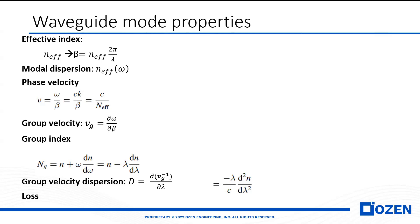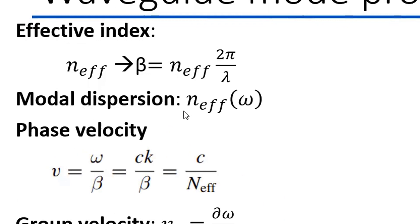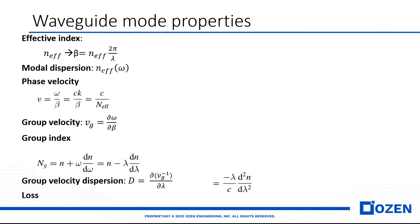The corresponding equation for each parameter you can see in this slide. For instance, in modal dispersion, the effective index depends on the frequency, and this is the origin of group velocity, group index, and group velocity dispersion. If we have one wavelength, it means that one wavelength experiences one effective index.